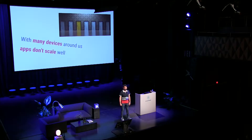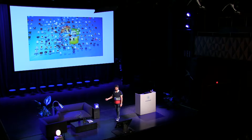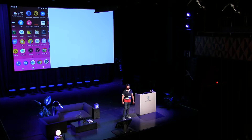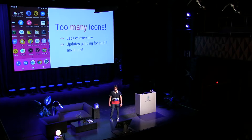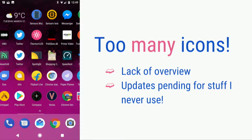When we get all these different devices around us, people are talking about ambient computing — everything is connected, everything is online. Well, maybe apps don't scale well enough for that. You've probably seen a cluttered Windows desktop. On phones it's becoming the exact same: all these different icons, lack of overview, and updates for apps you installed maybe half a year ago but never used ever since.